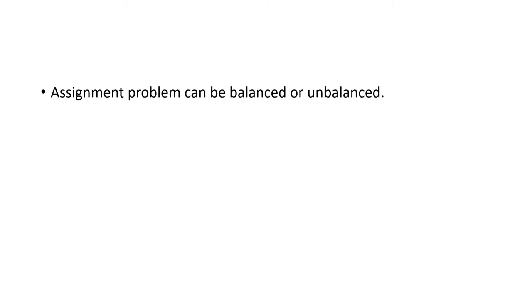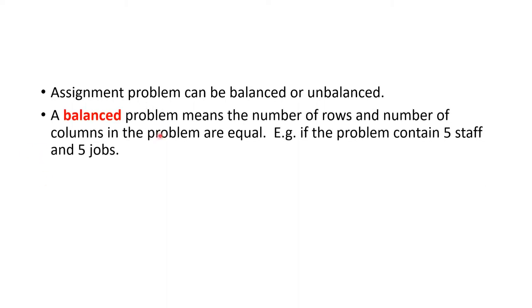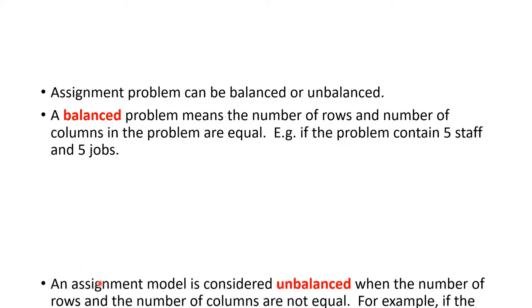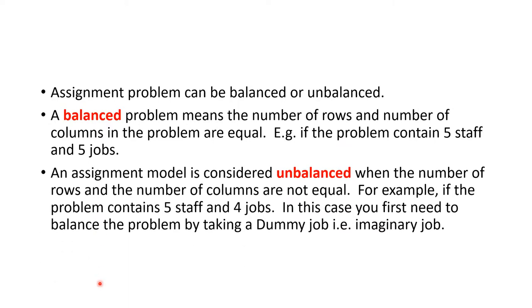The Hungarian Method works in two ways: balanced and unbalanced. A balanced problem means the number of rows and columns are equal — for example, five staff and five jobs. It is unbalanced if the number of rows is not equal to the number of columns, for example five staff and four jobs.